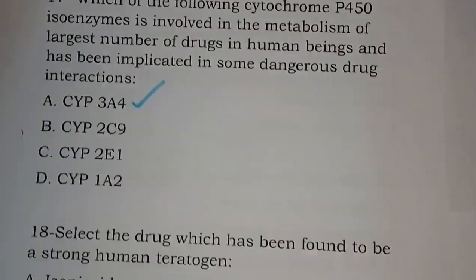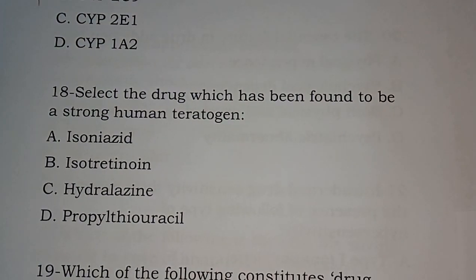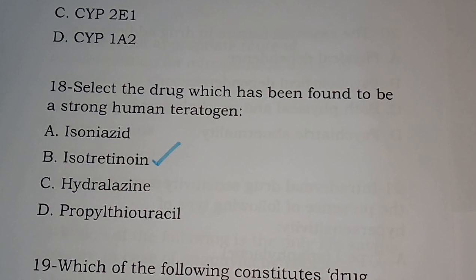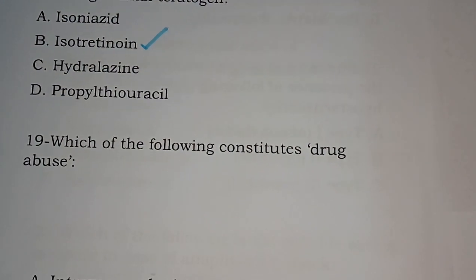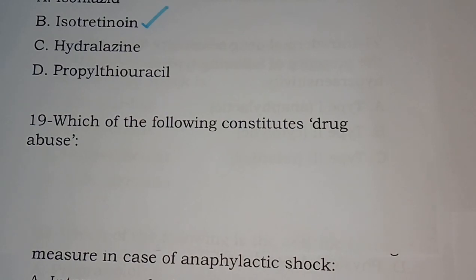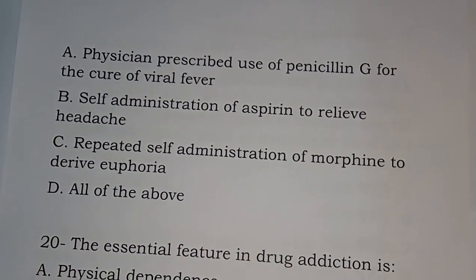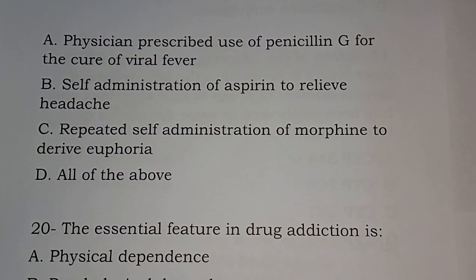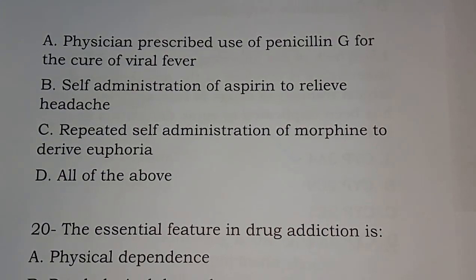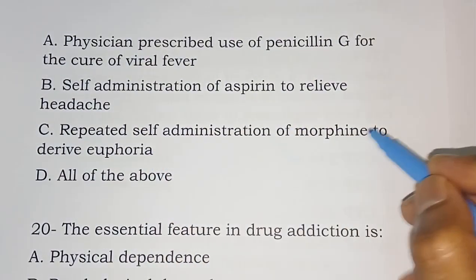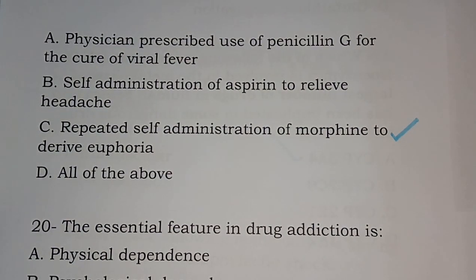Question number eighteen: select the drug which has been found to be a strong human teratogen — isoniazid, isotretinoin, hydroxyurea, propylthiouracil. The correct answer is option B — isotretinoin, which comes under FDA pregnancy category X. Question number nineteen: which of the following constitutes drug abuse? Options are: physician-prescribed use of penicillin for viral fever; self-administration of aspirin to relieve headache; repeated self-administration of morphine to derive euphoria; all of the above. The correct answer is option C — repeated self-administration of morphine to derive euphoria.